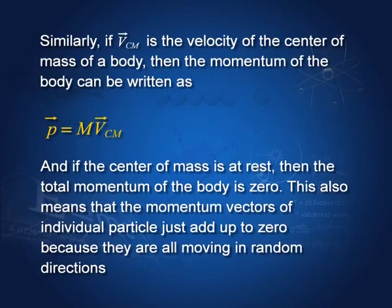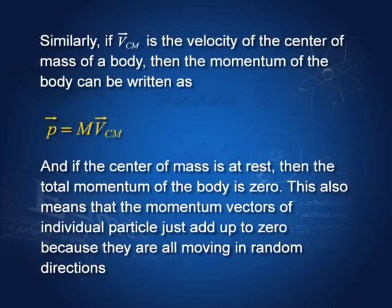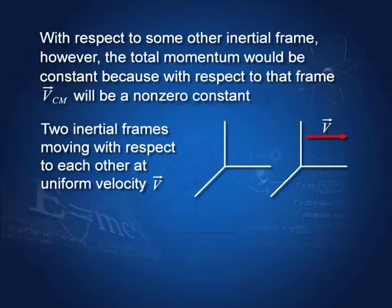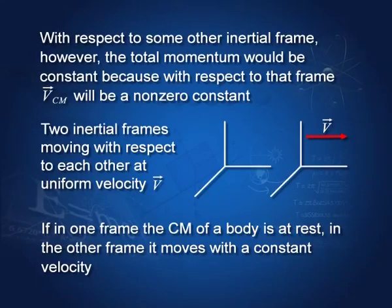Similarly, if the centre of mass moves with velocity V_CM, then its momentum is P = M·V_CM. If P = 0, then V_CM is either zero or constant. I have shown two inertial frames moving with respect to each other at constant velocity. So if in one frame the centre of mass is at rest, in another frame it may be moving with some constant or uniform velocity.